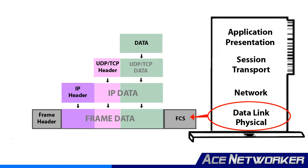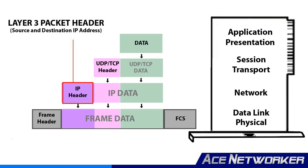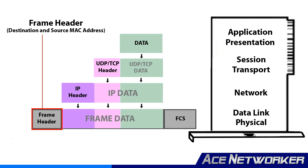The Layer 2 frame, which is wrapped around that Layer 3 packet, also has a header of sorts containing destination and source MAC addresses, the frame type, etc. Now, when we refer to headers in the networking world, 95% to 99% of the time we're talking about Layer 3 packet headers. But a frame has its own header information as well, so just understand that.